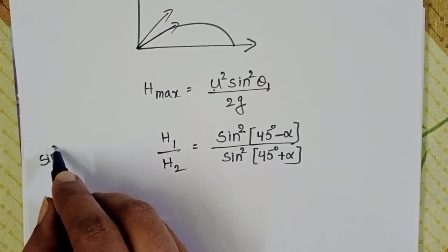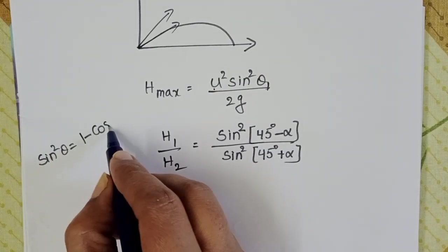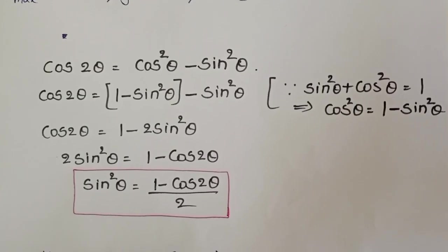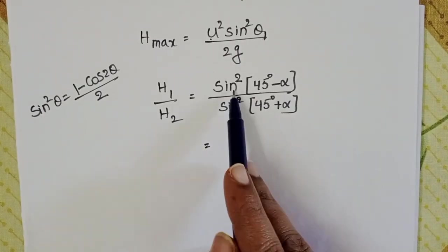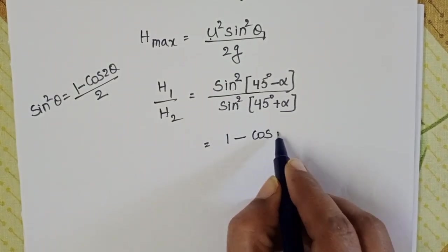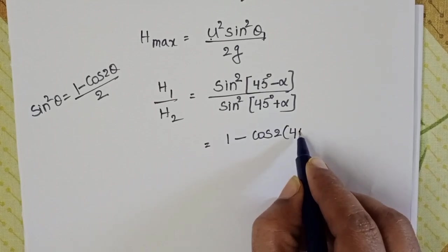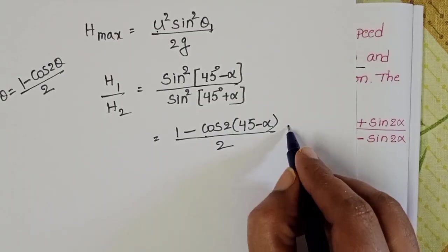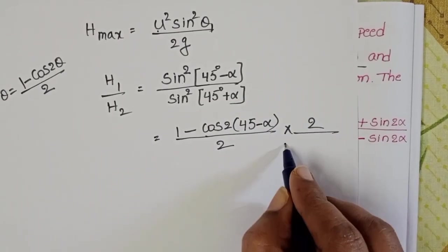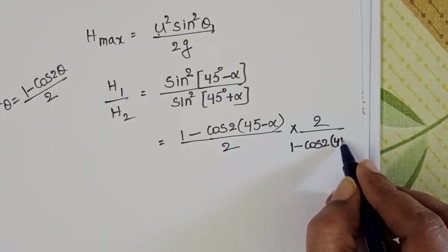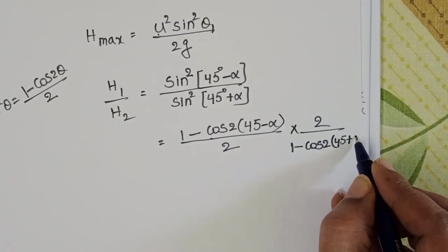Sine squared theta equals 1 minus cos 2 theta by 2. So in place of sine squared theta, write 1 minus cos 2 times 45 minus alpha by 2, times 2, by 1 minus cos 2 of 45 degrees plus alpha.